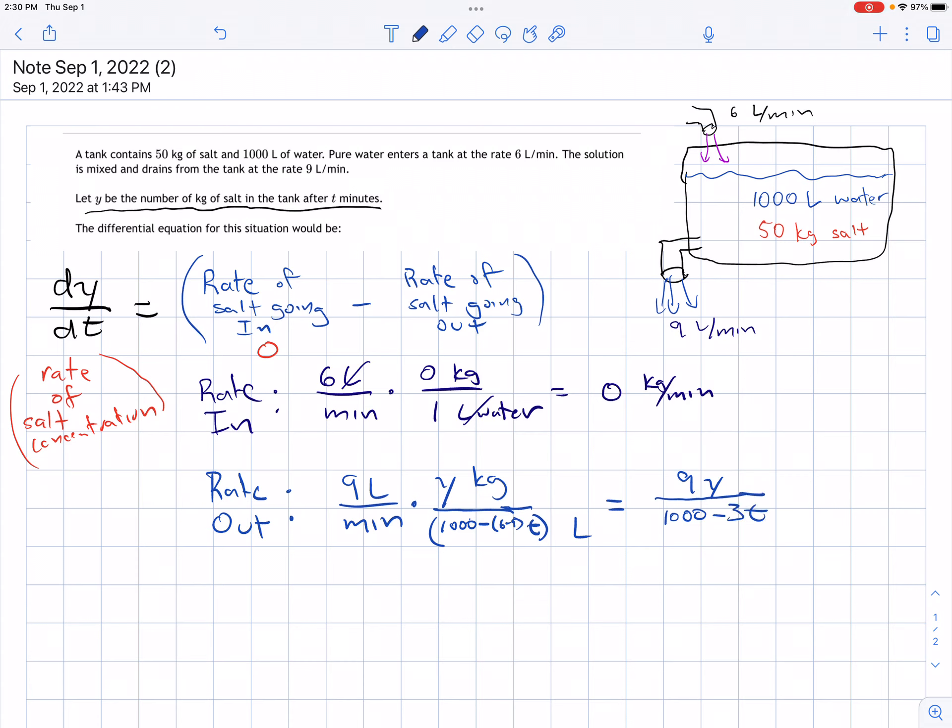For units, we know that's in kilograms per minute, so we're on the right track. In the end, we know that dy/dt, the rate of salt concentration, is -9y/(1000 - 3t). That negative sign confirms it's decreasing, as we expected from the setup. The units are kilograms per minute for the salt concentration rate. And that's it.